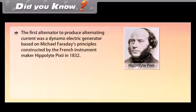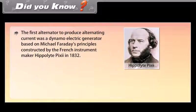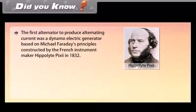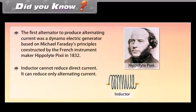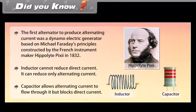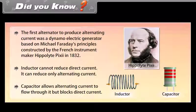The first alternator to produce alternating current was a dynamo electric generator based on Michael Faraday's principles, constructed by the French instrument maker Hippolyte Pixie in 1832. An inductor cannot reduce direct current; it can reduce only alternating current. A capacitor allows alternating current to flow through it but blocks direct current.